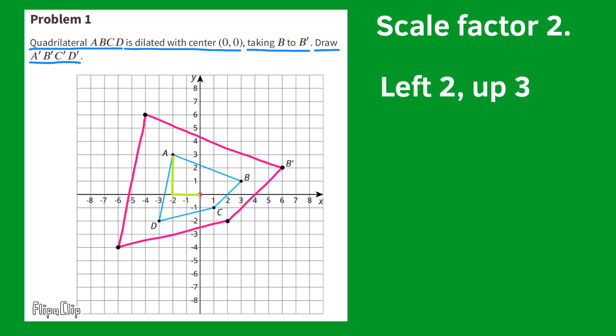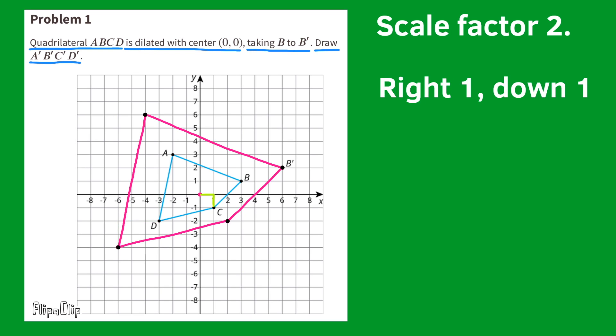For the remaining points: left 2, up 3 — repeat — to find the next dilated point. Then left 3, down 2 — repeat. And finally right 1, down 1 — repeat — to place the last dilated point.